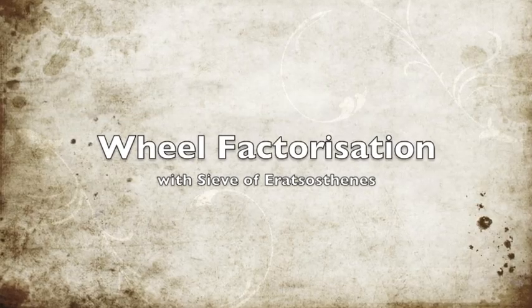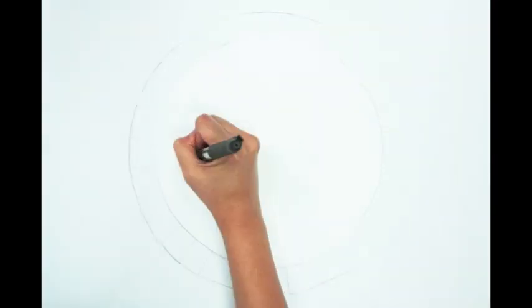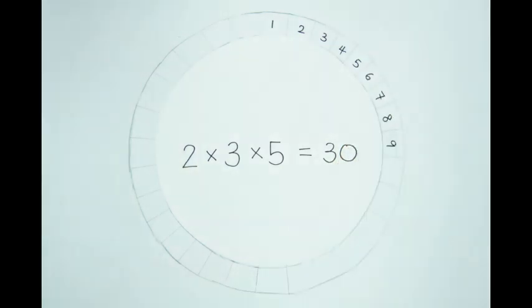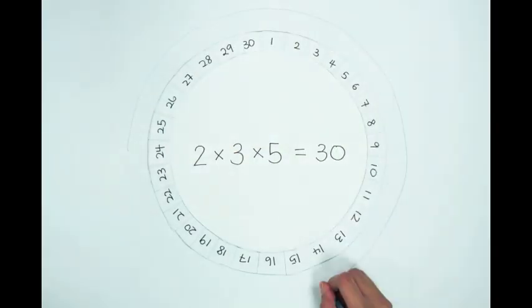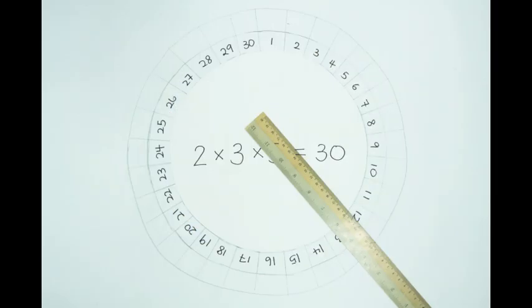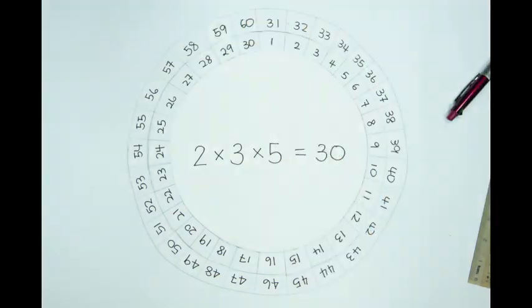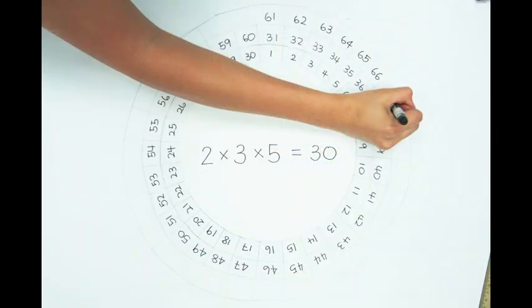An application of the sieve of Eratosthenes is the wheel factorization. In wheel factorization, we start with the first few prime numbers, for example, 2, 3, and 5. Multiplying these primes together gives you 30. We then arrange the numbers from 1 to 30 in sequence to form an inner circle. Subsequently, write down the next 30 numbers to form the second circle and so on. From this diagram, we first strike off the number 1.